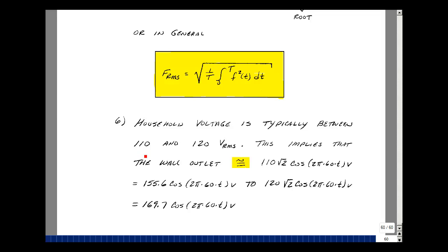You may have seen on the back of stereos or even labeling on wall outlets that voltages in a house are somewhere between 110 volts and 120 volts RMS. What that really implies is that the peak value would be 110 times the square root of 2, that would be 155.6, times the cosine of ωt, where ω is 2πf, which would be 2π times 60.